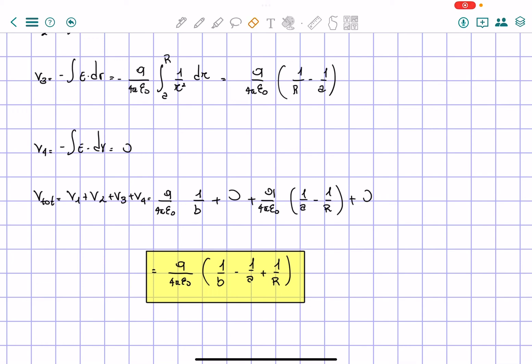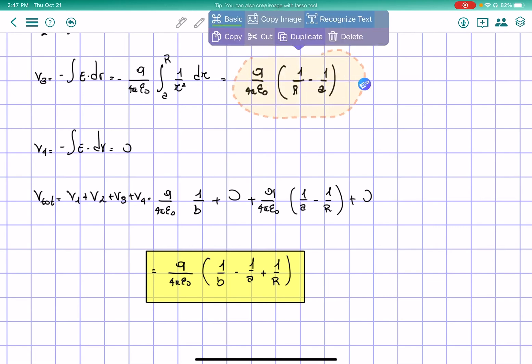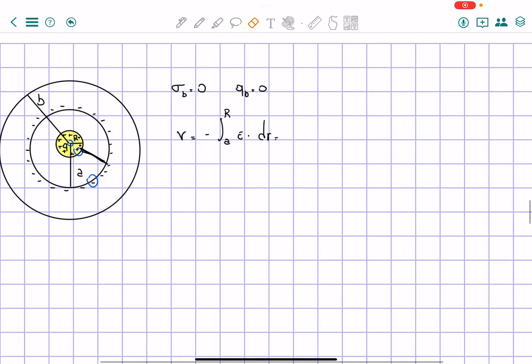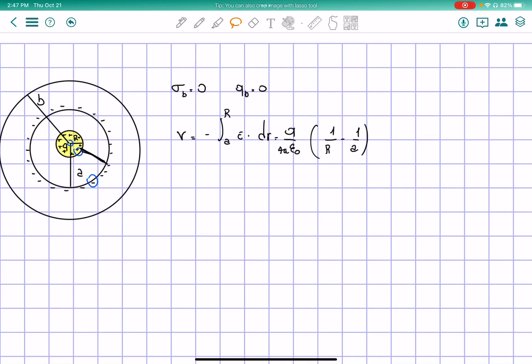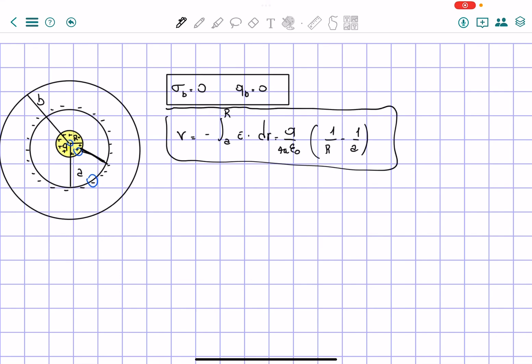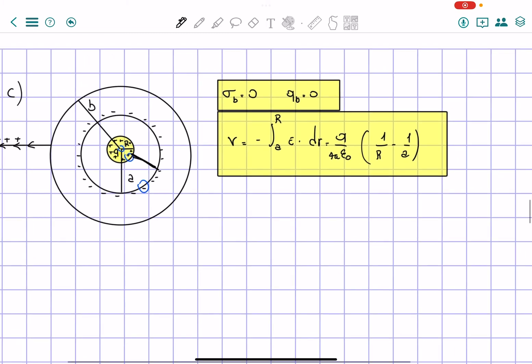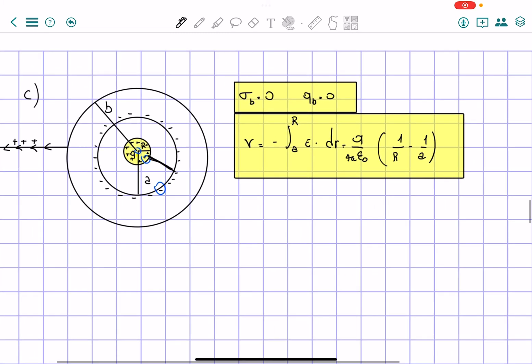So our final answer for part C will simply be this answer right here. That is the total electric potential from infinite to zero. That is the only one that matters. So these two are the two answers. Let me write another way. Okay, this is one. Second one. So these are the two answers that we have. Because, as we said, only the outer shell, the outer ring of the outer shell changes.